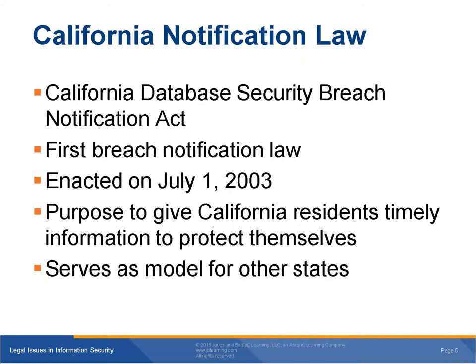California's Database Security Breach Notification Act went into effect January 1, 2003. The California legislature created the law after a security breach at a state-operated data facility. The legislature recognized that identity theft was one of the fastest growing crimes in California, and that people must act quickly to limit the harm caused by identity theft. The purpose of the law was to give California residents timely information so that they can protect themselves. The law applies to anyone who owns or uses computerized data that contains the unencrypted personal information of a California resident. It applies to state agencies, nonprofit organizations, private organizations, and businesses. It also can apply to businesses that aren't actually located in California — it covers any entity that stores the personal information of a California resident.